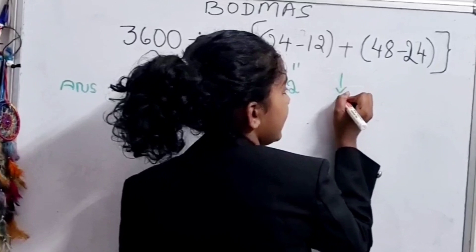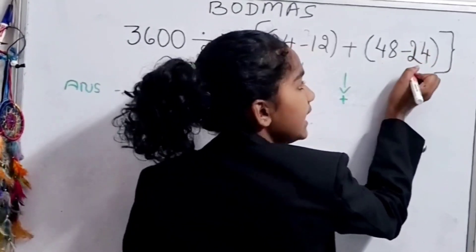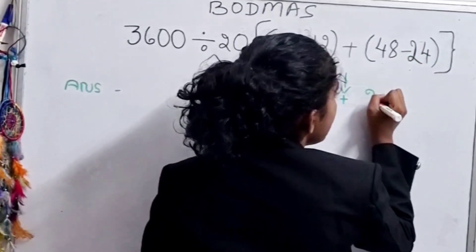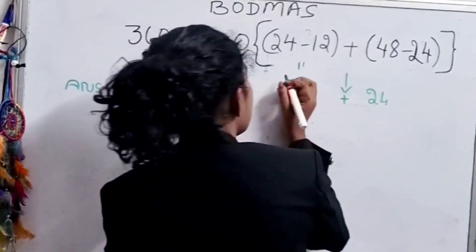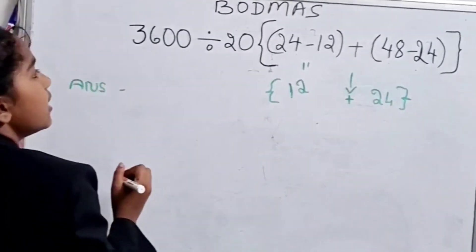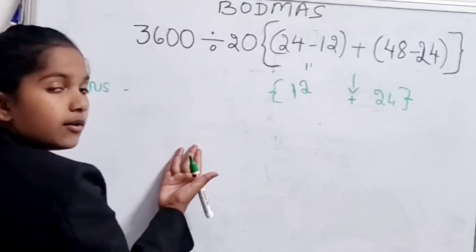And then we can add the plus sign like that only. Then 48 minus 24 equals 24 again. Now we can keep them in the bracket.